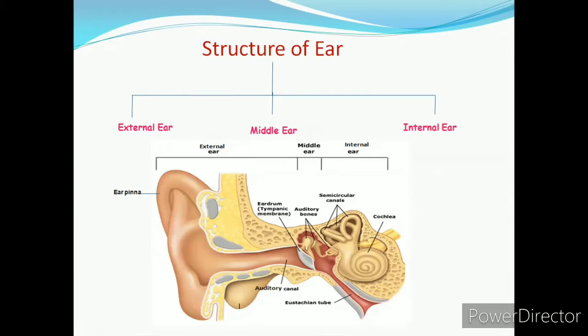We are going to discuss here the structure of ear. There are three main parts of ear. First is external ear. Second is middle ear. And the last is internal ear.